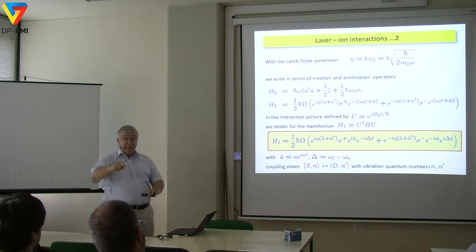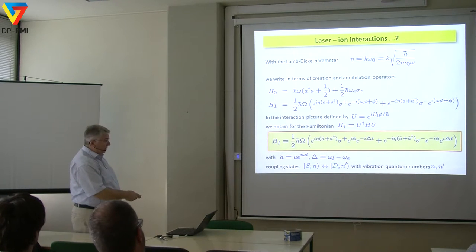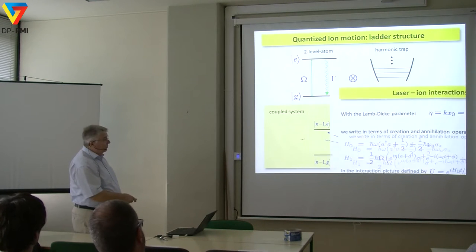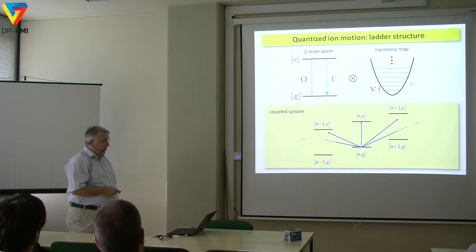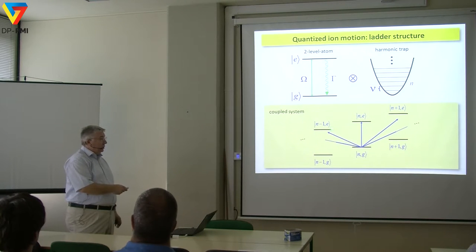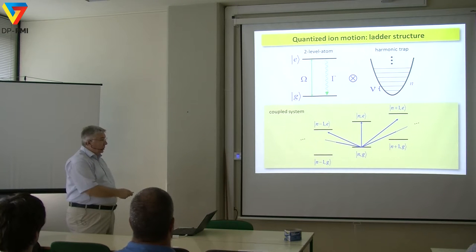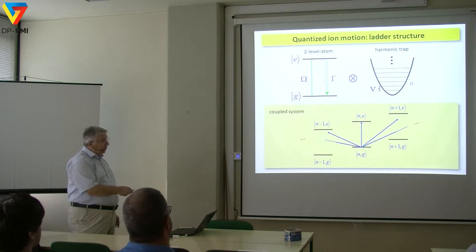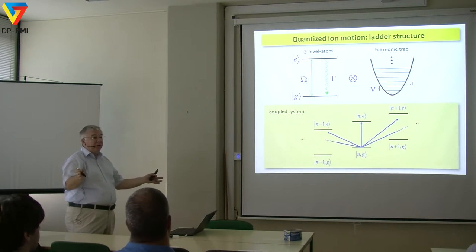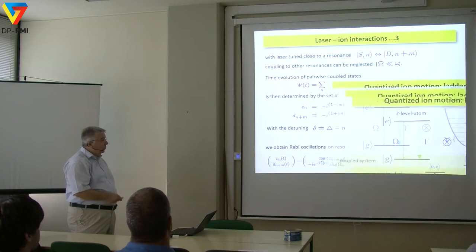We go to another rotating frame where the system rotates at omega, and we see that various states of the harmonic oscillator couple with each other — the ground state with quantum number N and the excited state with N-prime. Remember the ladder scheme: there are different vibrational levels N and N-prime, and different internal excitations. Since the level width is about 1 Hz and the distance between vibrational levels is about 1 MHz, we can treat each as an independent isolated two-level system.